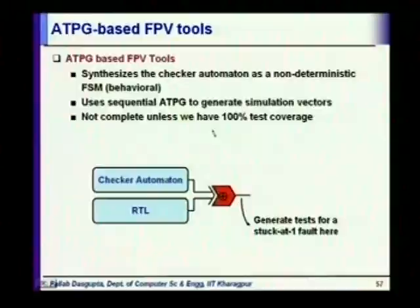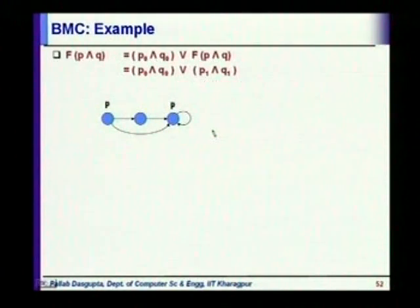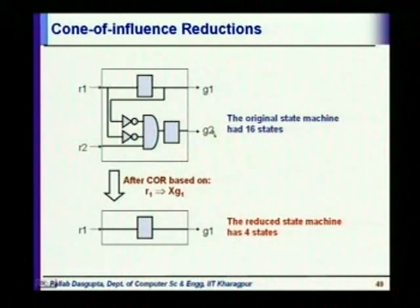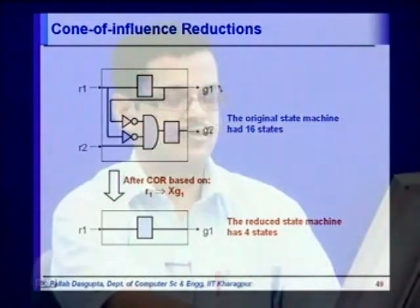We will stop here today. In the next class, we will look at bounded model checking and how people manage different types of constraints to keep the state space contained. After that, the remaining topic in formal property checking is the counter-example guided abstraction refinement approach, and then we will move on to other things.